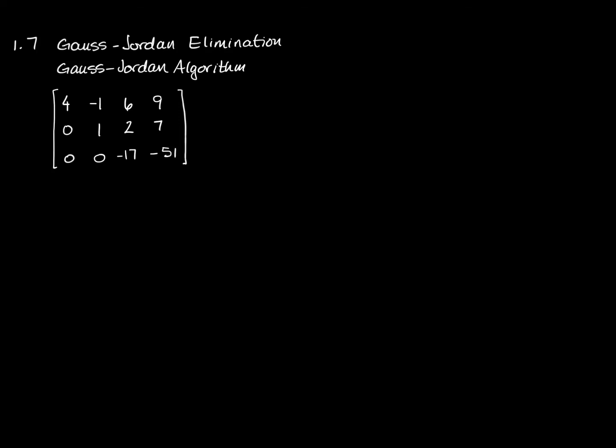Gauss-Jordan elimination takes Gaussian elimination to the next step. In Gaussian elimination, we take a matrix, find its pivots, and make sure that everything below all of those pivots is zero. This matrix is already in echelon form — if it didn't start out looking like this, elementary row operations have been performed so that each pivot has zeros below. That's called forward elimination. We're going to take it to the next step and perform Gauss-Jordan elimination.